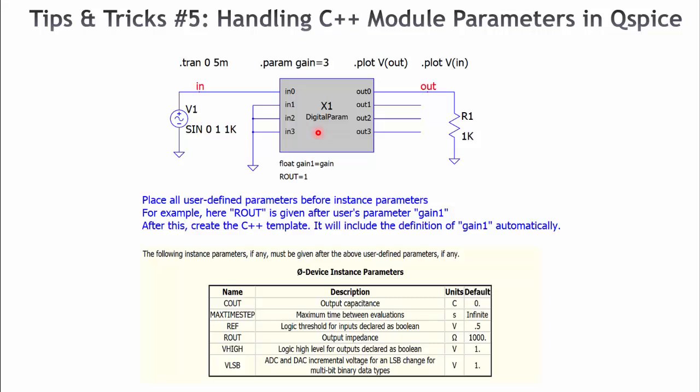On one hand, we have the inherent parameters of the C++ modules as shown here, for example, the output capacitance of the module, the maximum time between evaluations, and so on. So these are parameters that belong to the C++ module.